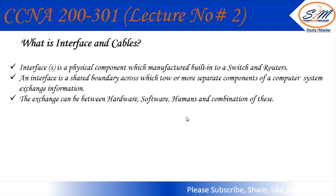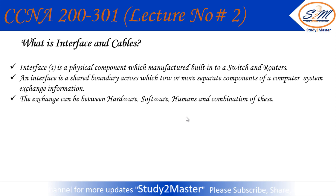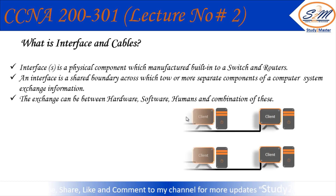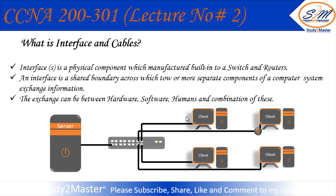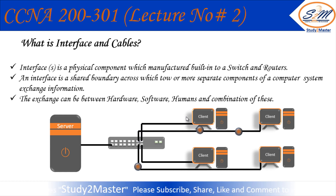What does interface exactly mean? An interface is just a physical component manufactured by companies, built into computers, switches, and routers. An interface is a shared boundary across which two or more separate components of a computer system exchange information. The exchange can be between hardware, humans, software, or a combination of these.